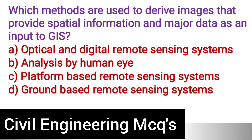Next question: Which methods are used to derive images that provide spatial information and measure data as an input to GIS? Option A: Optical and digital remote sensing system. Option B: Analysis by human eye. Option C: Platform-based remote sensing system. Option D: Ground-based remote sensing system. The correct answer is option A, optical and digital remote sensing system.